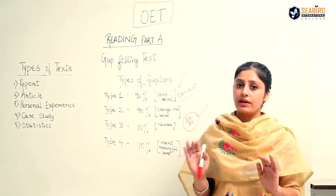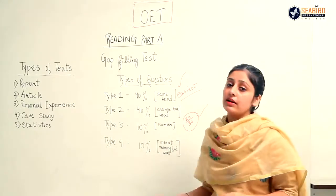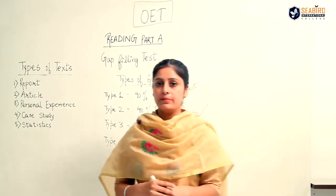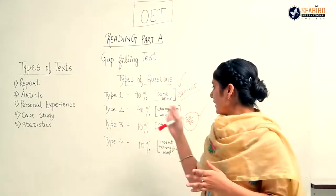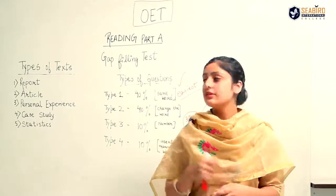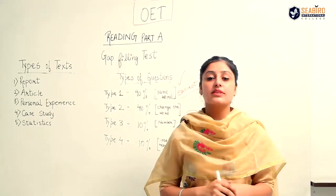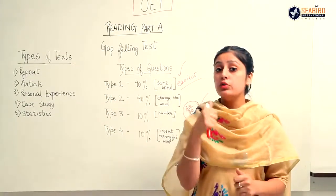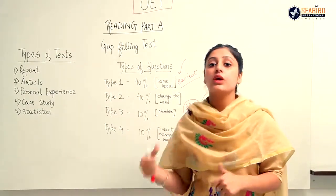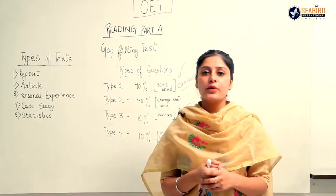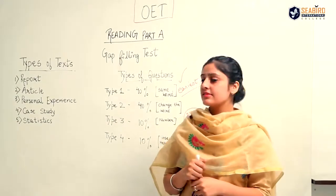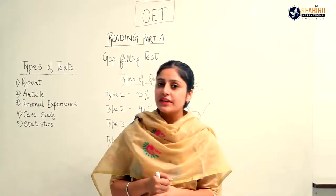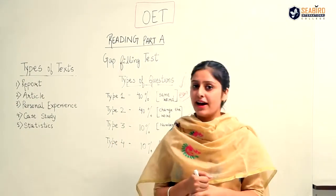Nobody can do it without practice — not even me. I also need to practice these questions. So this is how you have to attempt part A. I hope these things are clear to you, and this is how you can score good marks in reading part A. You need to score a minimum of 33%, and you can very easily get 20 out of 30 questions correct. See you in the next video with reading part B. Thank you, bye-bye.